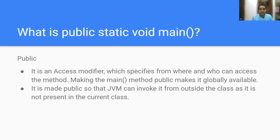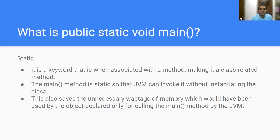Now, what is static? Static is a keyword — there are various keywords available in Java. It is associated with a method, making it a class-related method. The main method is static so that JVM can call it without instantiating the class. This saves unnecessary wastage of memory — if you create an object just to call main, memory is being utilized for no reason.